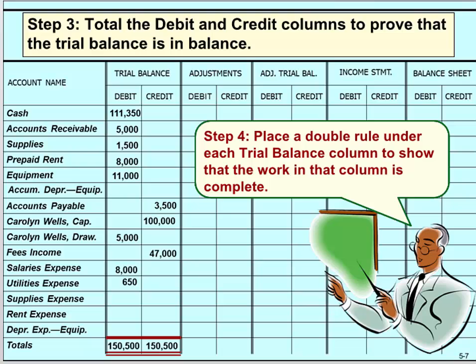Next, using the General Ledger, we transfer the account balances to the debit and credit columns. After entering all of the balances from the General Ledger, we need to foot the columns in the Trial Balance section.